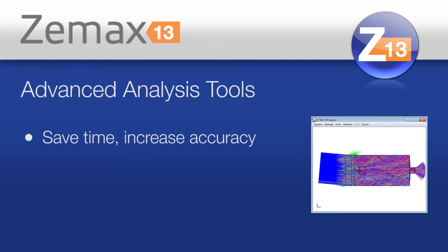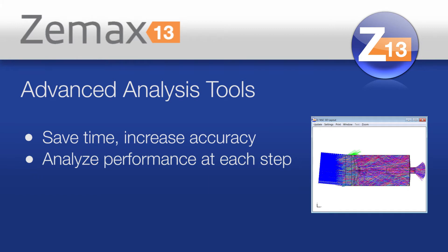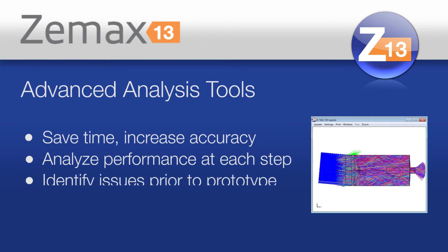This is particularly important when you're concerned about unwanted light in an optical system. Unwanted light contaminates the signal that you want to see and prevents you from being successful. Advanced path analysis really helps you nail that right at the start.